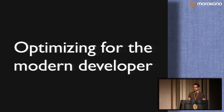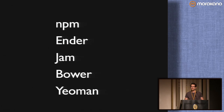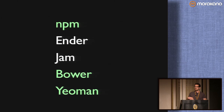We want to optimize for the modern developer and the modern developer's toolchain. There are several package managers to consider: NPM, Ender, Jam, Bower, and Yeoman. The ones to really focus on are NPM, Bower, and Yeoman. Ender and Jam are good projects but never really caught on and are a bit older, so it's better to look toward NPM and Bower which have more community support. Yeoman isn't necessarily just a package management tool — it does a whole lot more, and Paul Irish is giving a talk on it tomorrow, so check out his keynote if you want to learn more.